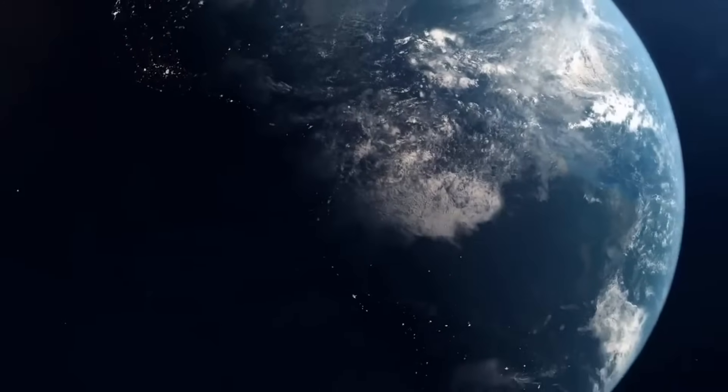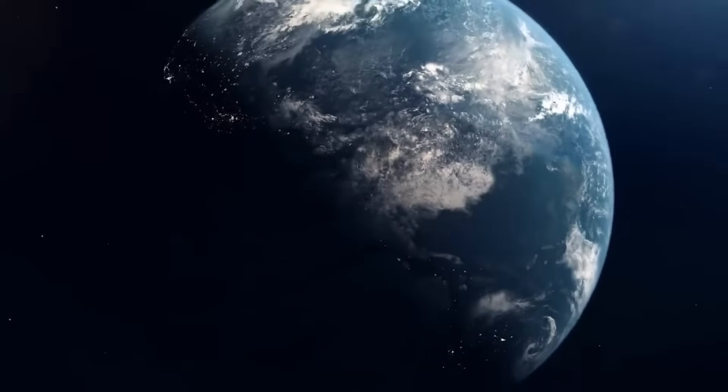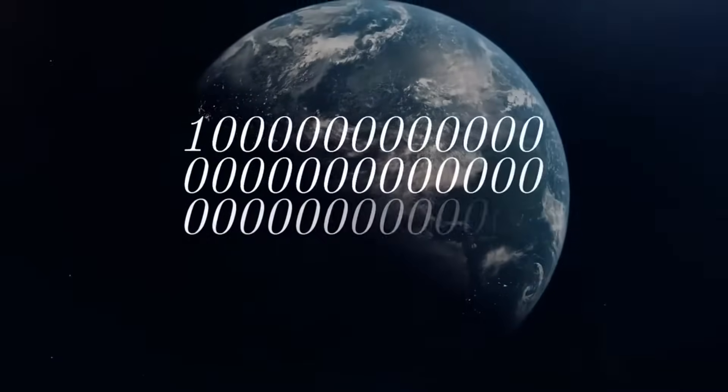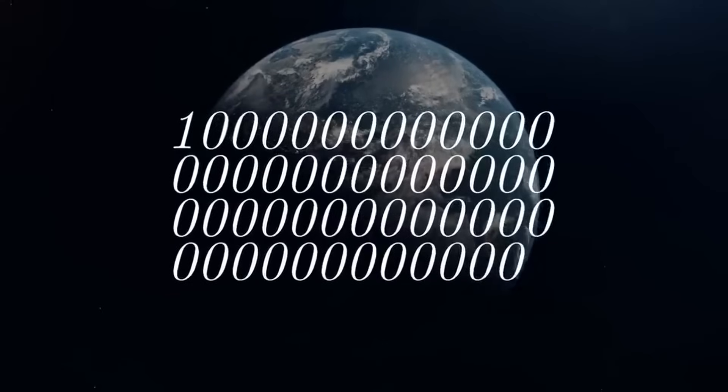7 octillion atoms make up your body. That's a 7 followed by 27 zeros. The whole of planet Earth is composed of 100 quindicillion atoms, or a 1 followed by 50 zeros.